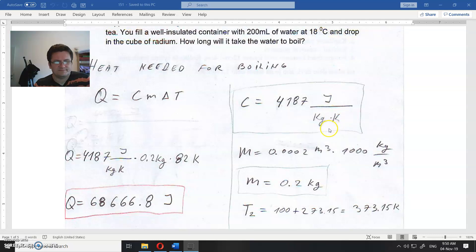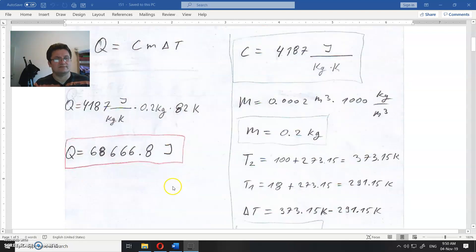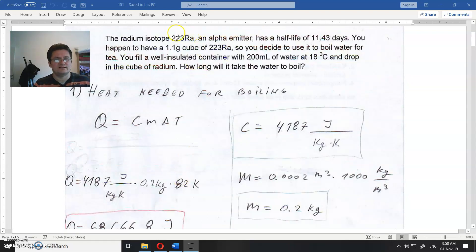You multiply the specific heat, mass, and temperature difference, and you get 68,666.8 joules. That's how much energy you need to boil this water at this temperature. So we found the heat needed.